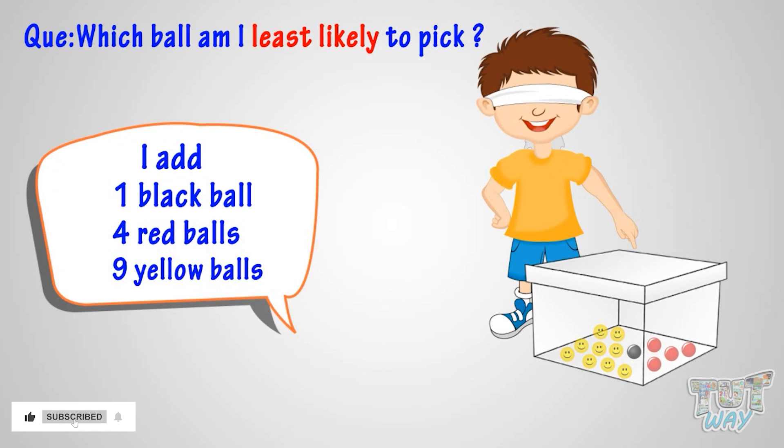Now if I pick out any one ball from the box without looking into the box, which ball am I least likely to pick? Think. Least likely: black ball, because there is only one black ball in the box.